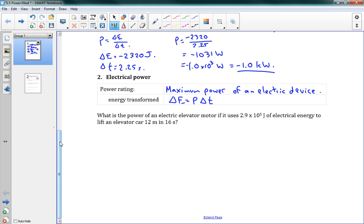This example says what is the power of an electrical elevator motor if it uses 2.9 times 10 to the 5 joules of electrical energy to lift an elevator car 12 meters in 16 seconds. P equals delta E over delta T. Delta E is 2.9 times 10 to the 5 joules. Delta T is 16 seconds. The power is 2.9 times 10 to the 5 over 16 seconds, which gives us 18125 watts, or 18 kilowatts.